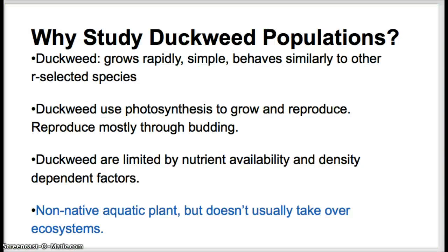We study duckweed because there are lots of species we could choose — we could study yeast or all sorts of things — but duckweed grows rapidly. It's a really typical R-selected species that reproduces frequently and can be limited easily by different environmental factors. It is a plant, a producer, so it photosynthesizes to grow and reproduce, so you need to recall the inputs and outputs of photosynthesis.